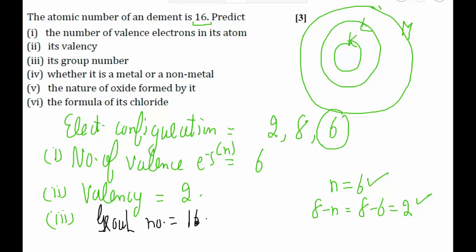The fourth part asks whether it is a metal or a non-metal. Always remember that the elements which are present on the left hand side of the period are metals, and as we move in a period from left to right, the metallic character decreases. Because this element is present on the right of the periodic table in its period, it will be a non-metal.